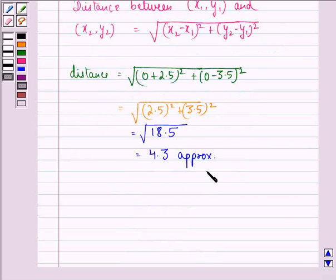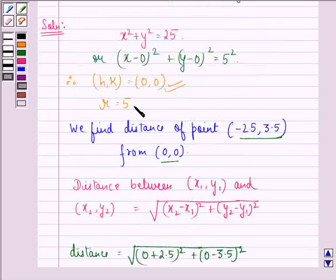Now, this is less than 5. So, we see that the distance of the point from origin is less than the radius that was equal to 5. Hence, we can say that the point lies inside the circle.